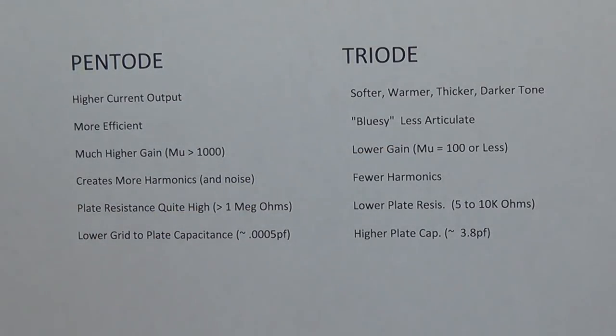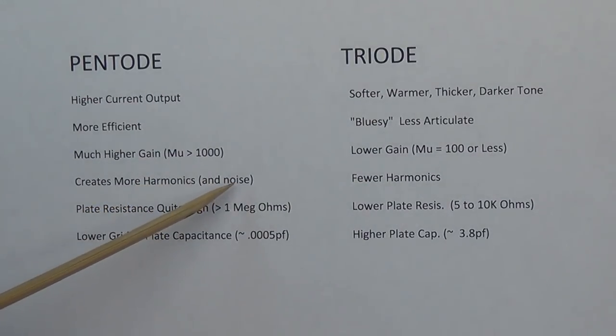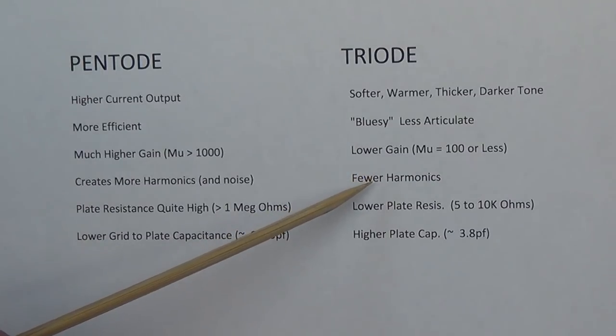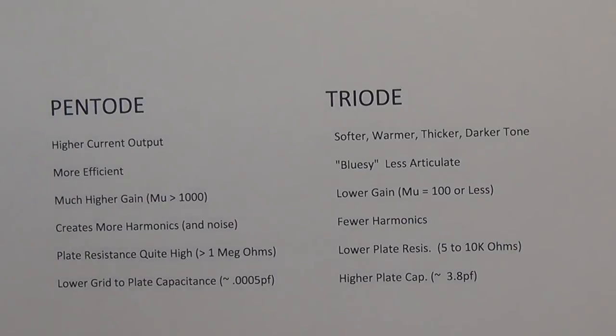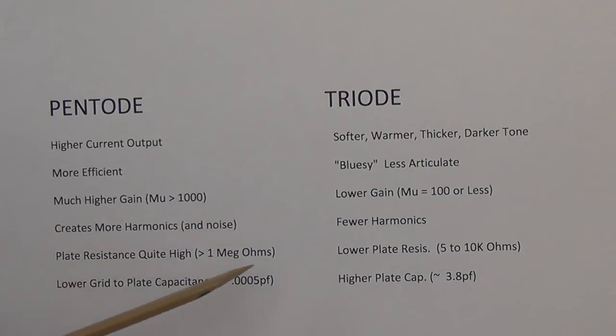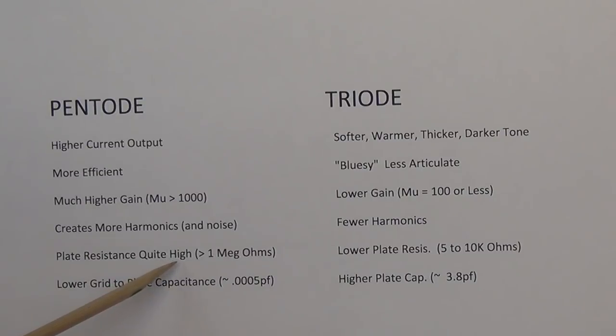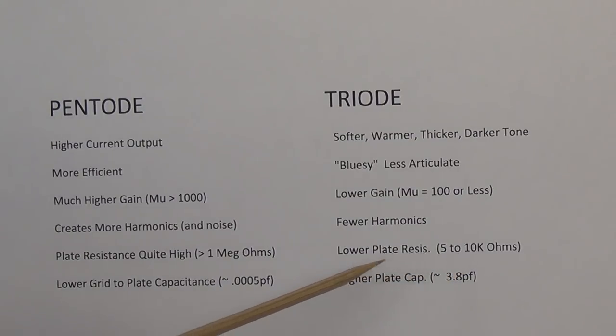Pentodes, because of their higher gain, will create more harmonics and more noise. Triodes will produce fewer harmonics and they're a little quieter. This is sort of like humbuckers versus single coils. And finally, we're left with two rather esoteric differences between pentodes and triodes. The first of these is plate resistance, which is quite high for pentodes, generally greater than 1 million ohms. Triodes have a much lower plate resistance, generally from around 5 to 10,000 ohms. I think you'll see, and it's a little beyond the scope of this discussion, that this is the source of the higher gain in the pentode. The higher gain and the plate resistance are directly related.